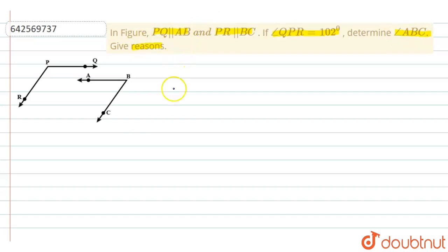So this is our diagram. Extend AB to meet PR at G.